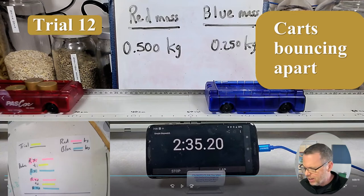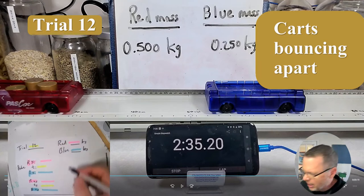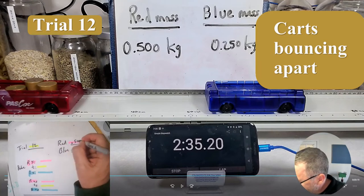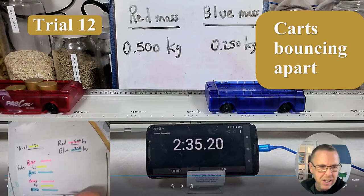So I'm going to go over here and I'm going to write down my initial information and this is trial number 12 and I see that the red car has a mass of 0.500 and the blue car 0.250.